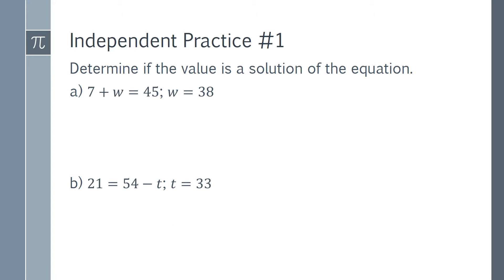Independent Practice Number 1. Determine if the value is a solution of the equation. Part a: 7 plus w equals 45, when w equals 38. Part b: 21 equals 54 minus t, when t equals 33. Now is a good time to pause this video and work on this problem if you have not done so already.